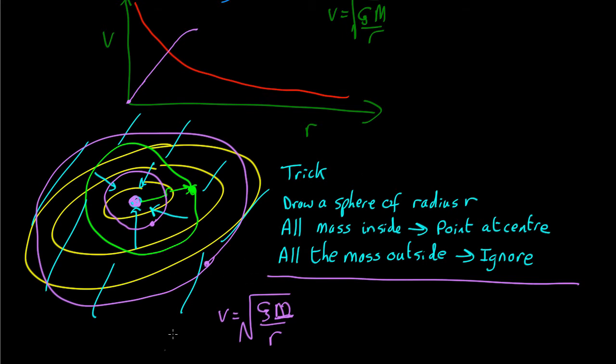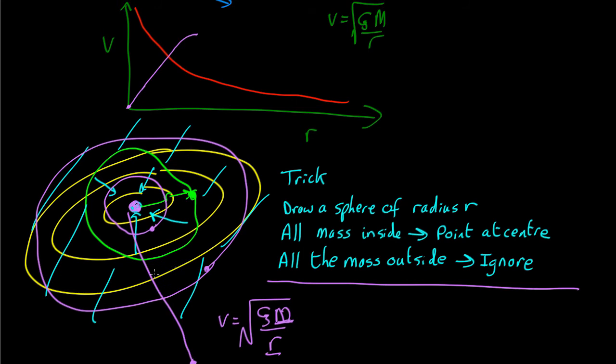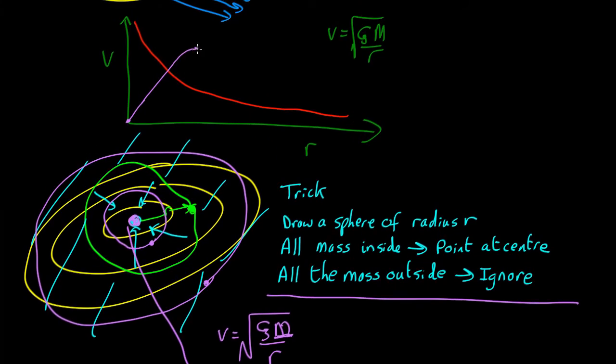And then when you go further out still, say over here, r has got larger. m can't get any larger because you've already got all the stars inside. So now it starts behaving like 1 over root r, as you expect.